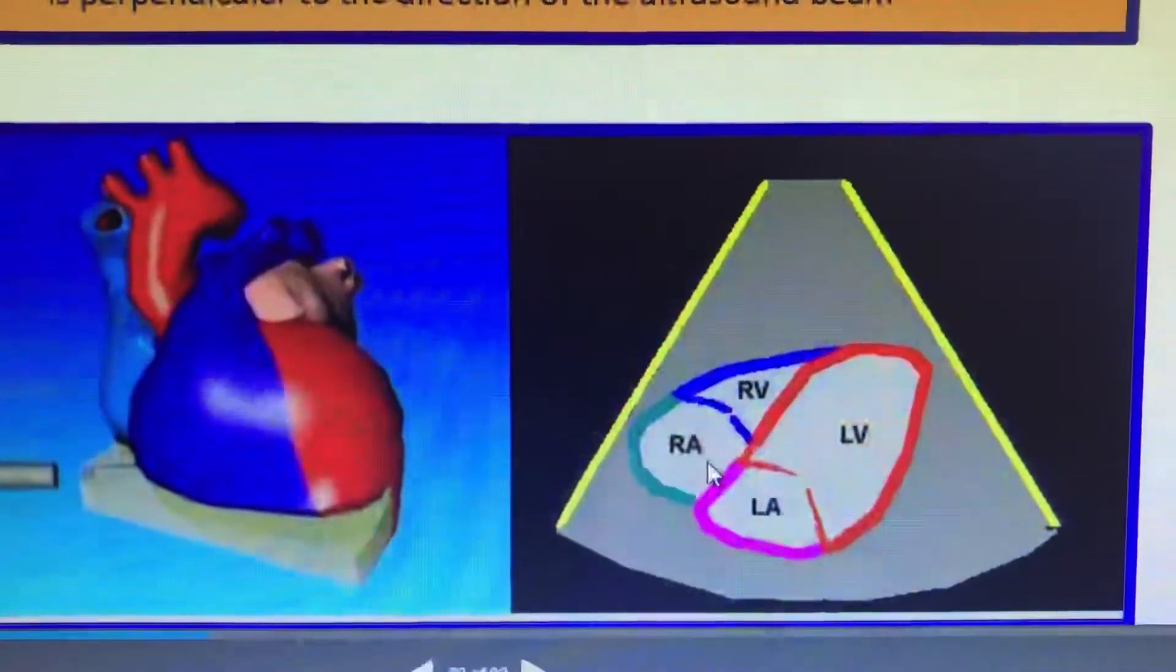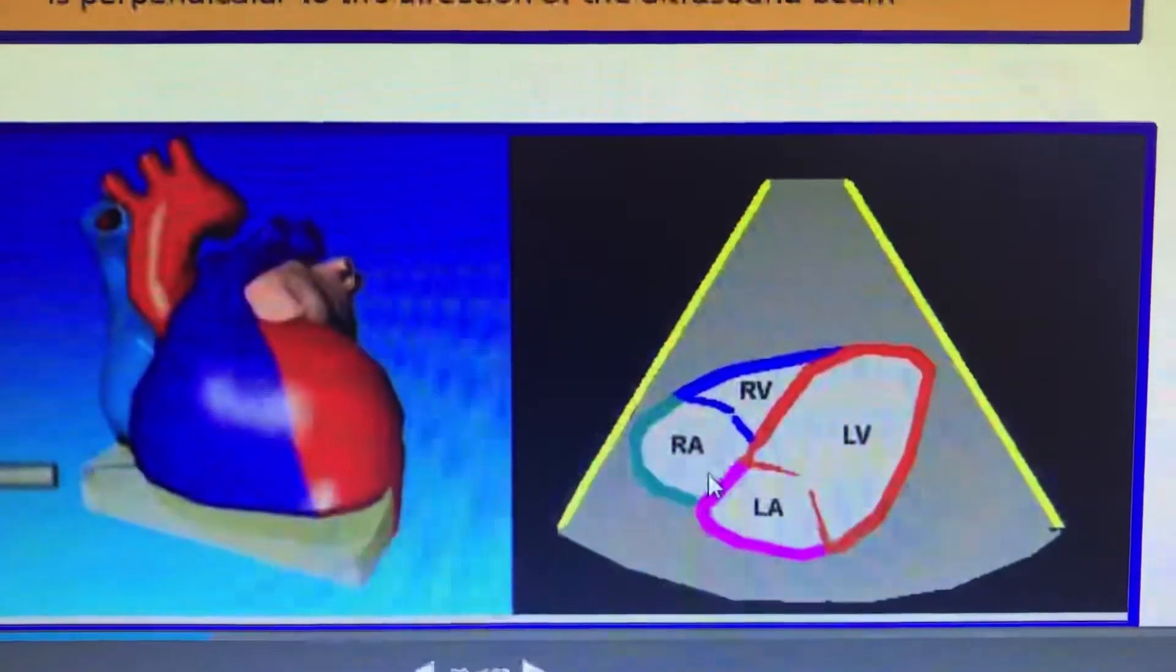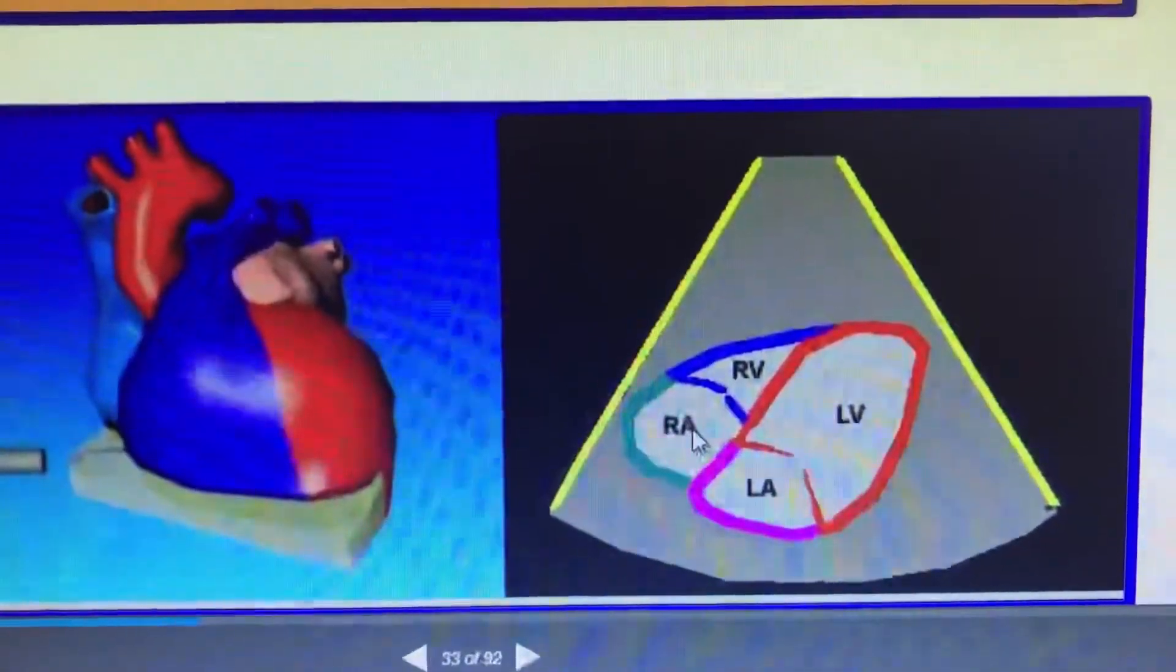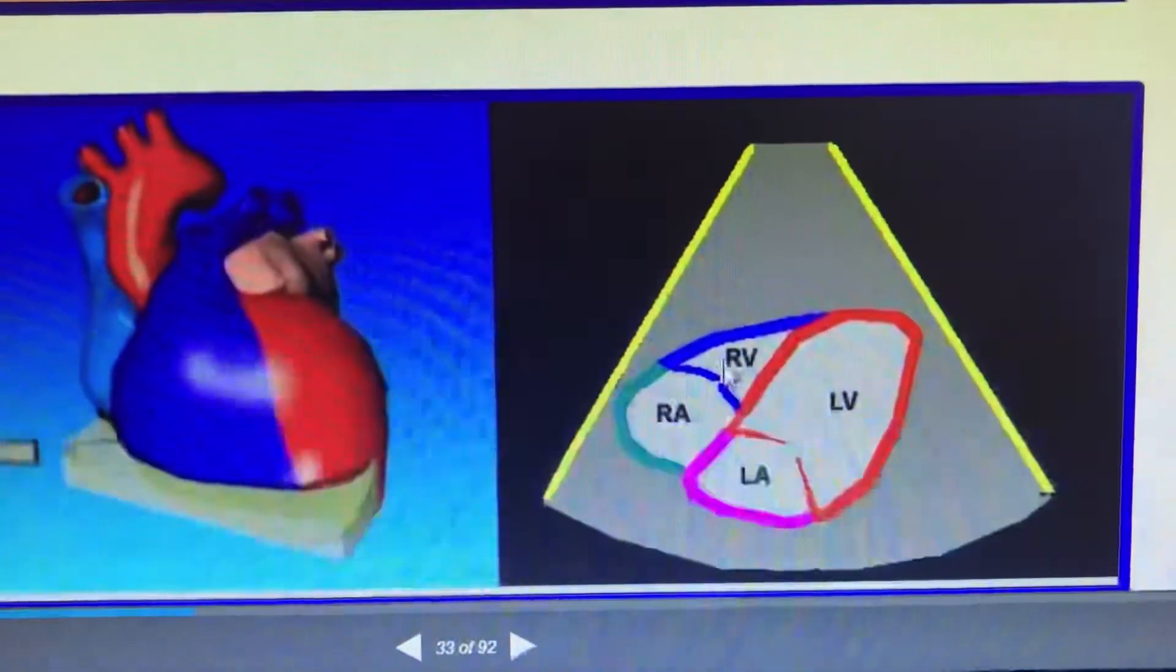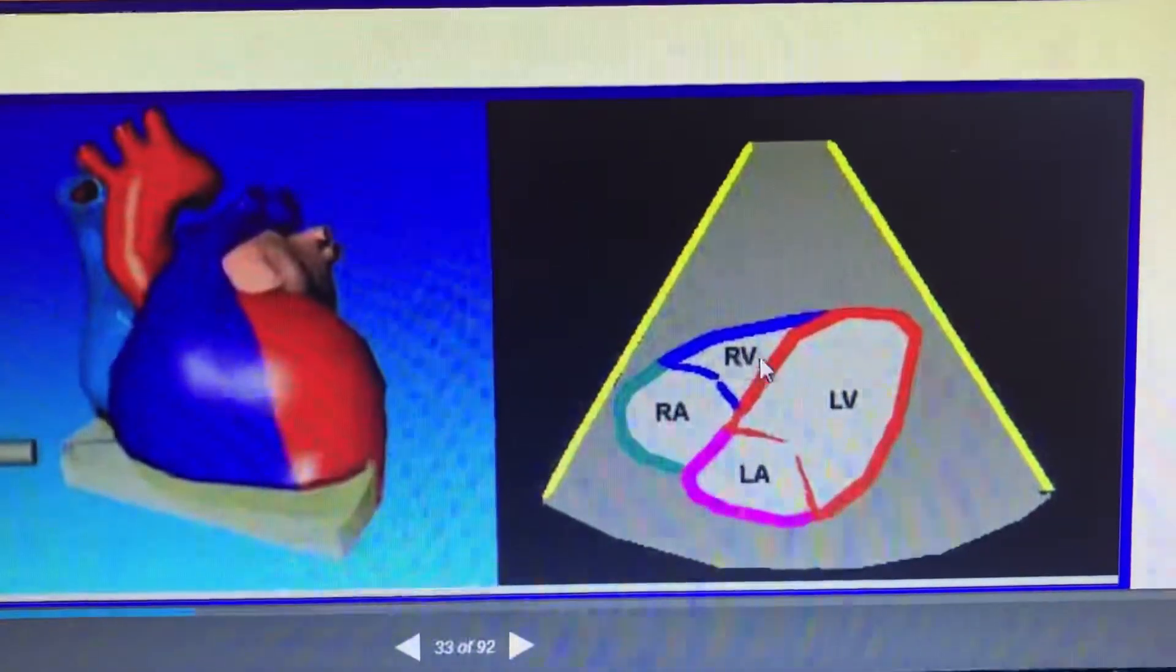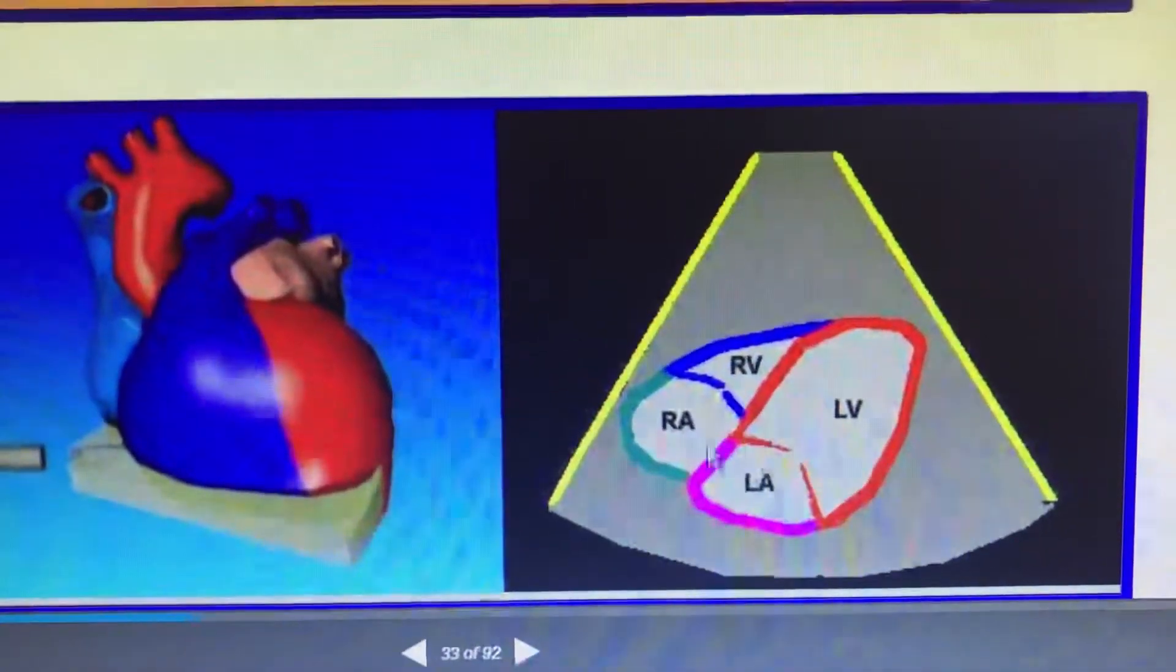If you increase the cranial or caudal angulation, you can see the IVC opening into the RA. Here you can see the RA, LA, RV, and LV. Most of the time, the RV is seen, and the IAS is very beautifully seen.